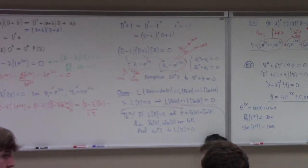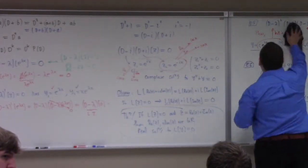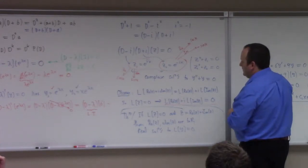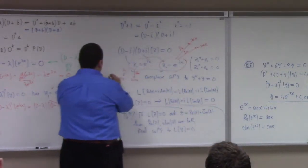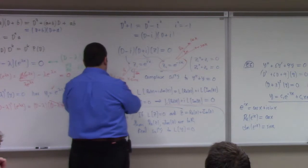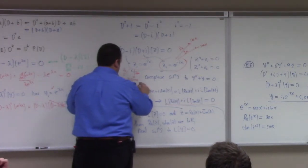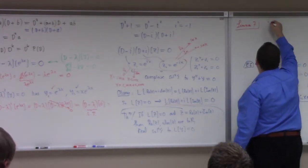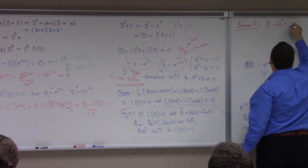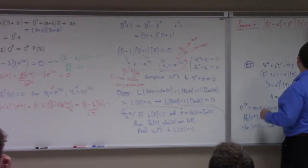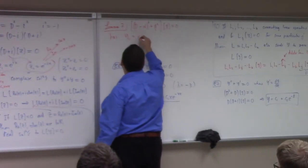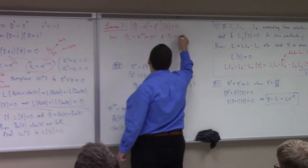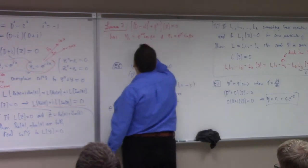So the general solution is y = c1·cos x + c2·sin x. Now here's essentially Lemma 7: if we have the operator (D − α)² + β² acting on y equal to zero, this has solutions y1 = e^(αx)·cos(βx) and y2 = e^(αx)·sin(βx).